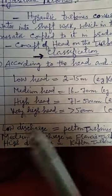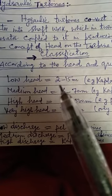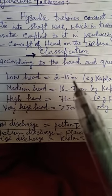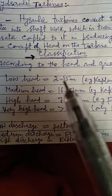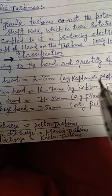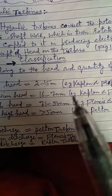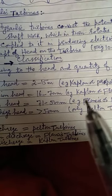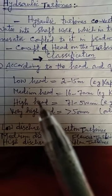Based on head, there are low head turbines with a head range of 2 to 15 meters. For low head turbines, the example is the Kaplan or propeller turbine. We will discuss these in more detail later. There is also a medium head turbine with a head range of 16 to 70 meters, and the example is the Kaplan or Francis turbine.